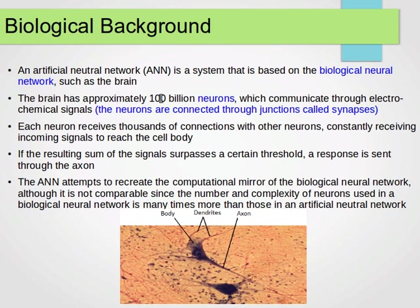So the brain has approximately 100 billion neurons, and they communicate through electrochemical signals. The neurons are connected through junctions called synapses. Each neuron receives thousands of connections with other neurons and constantly receives incoming signals to reach their cell bodies.